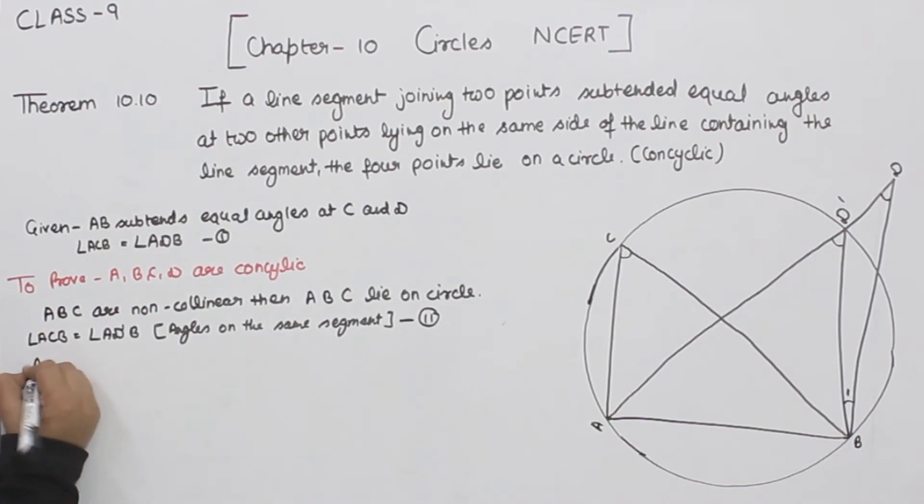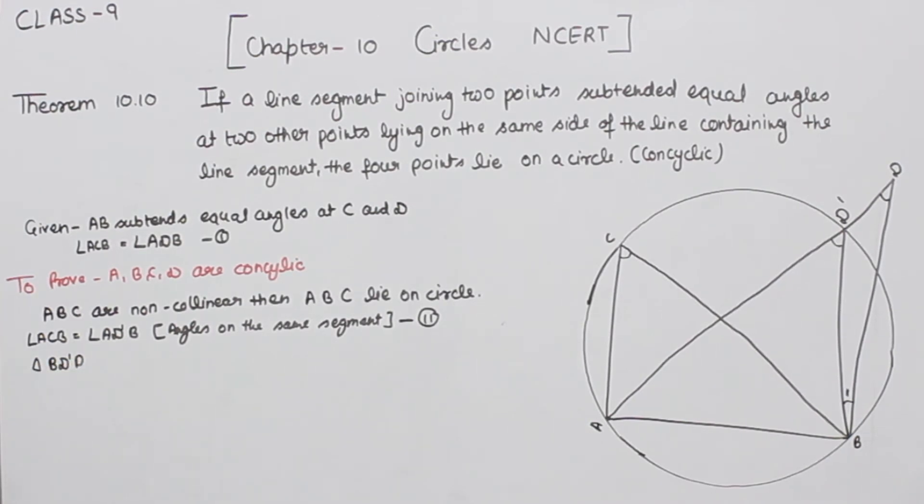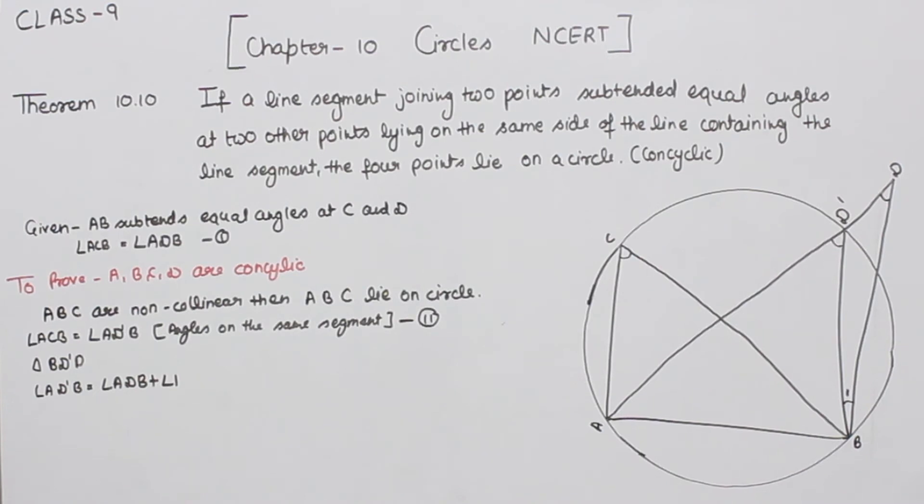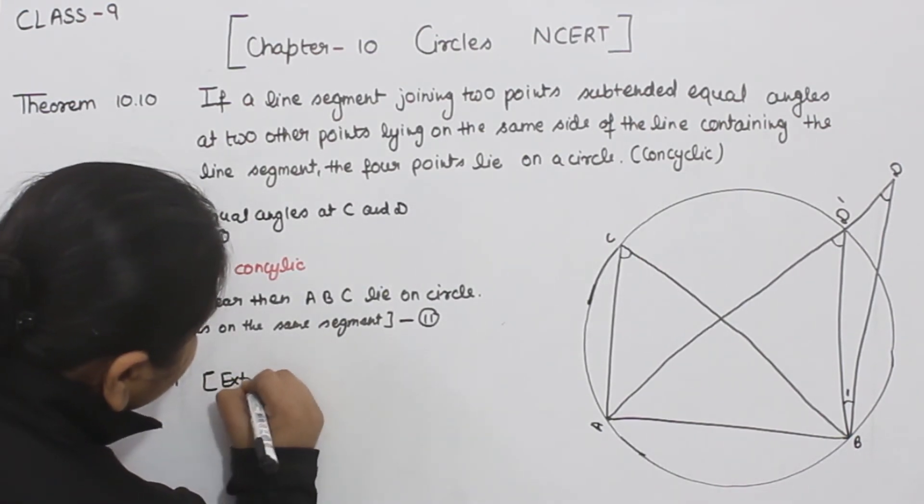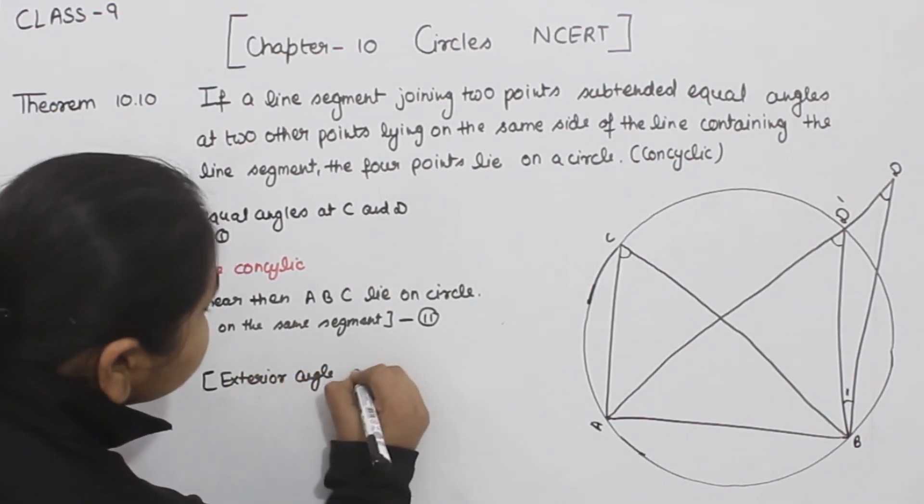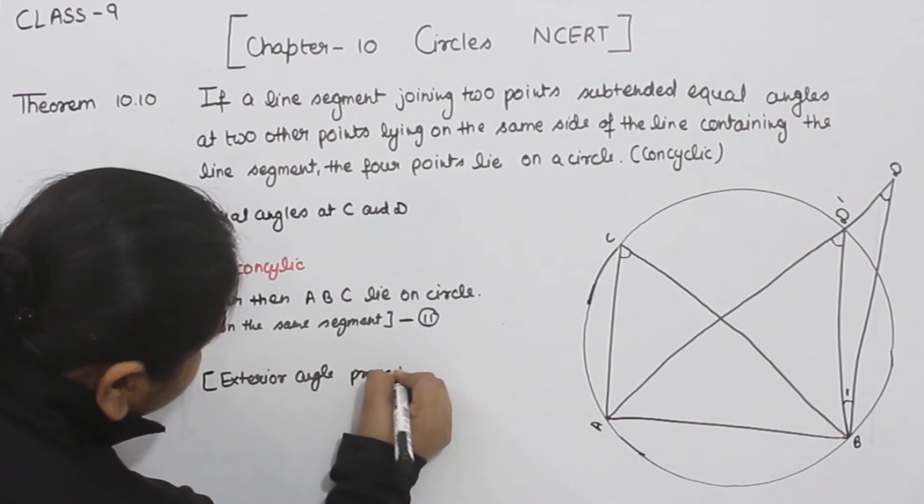Now we are going to take triangle BD'D. In triangle BD'D, angle AD'B is equal to angle ADB plus angle one. Why? Because of the exterior angle property.